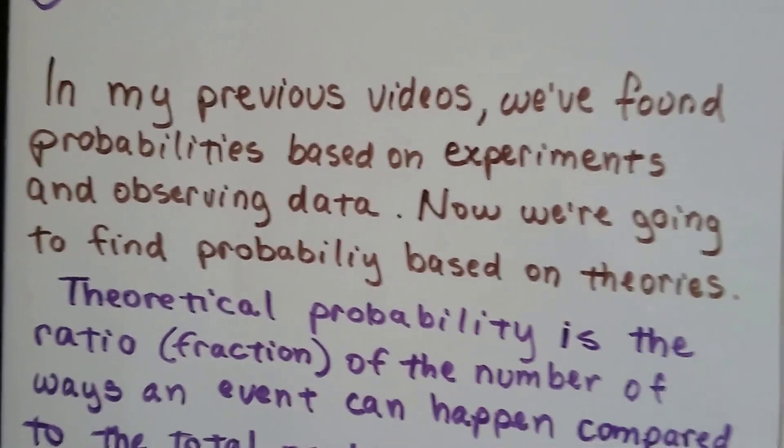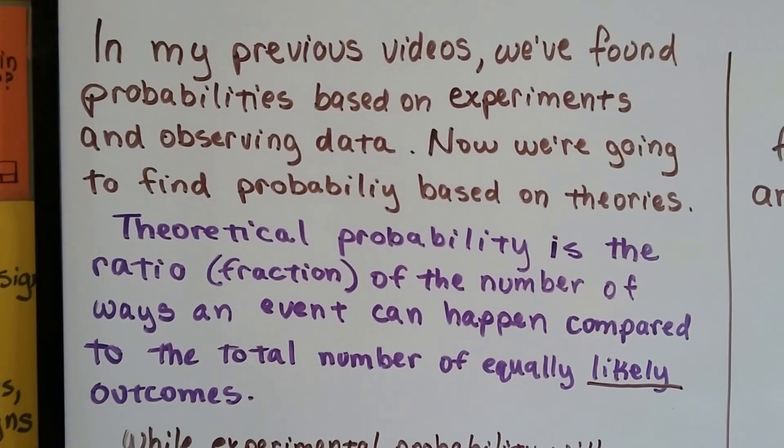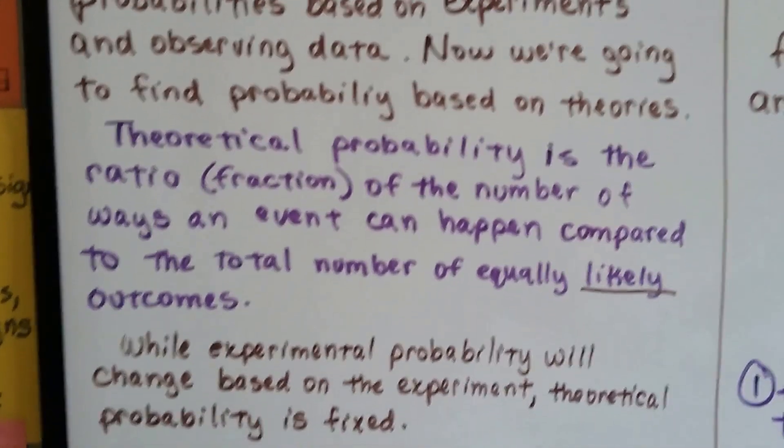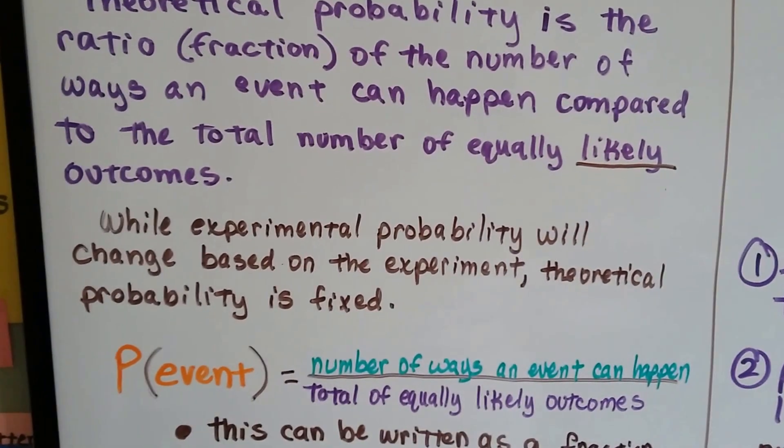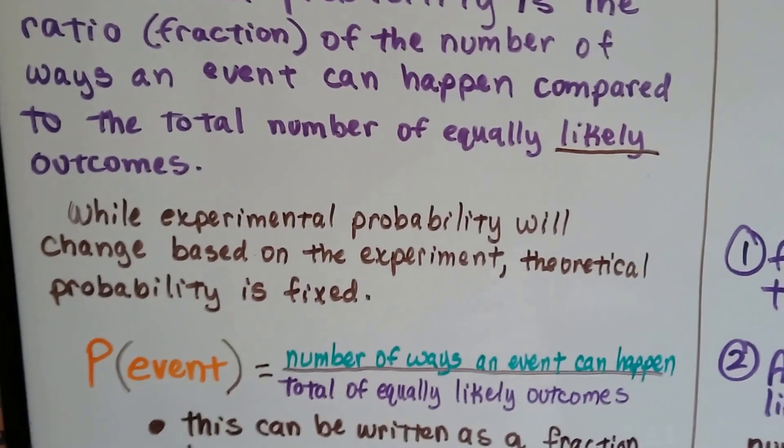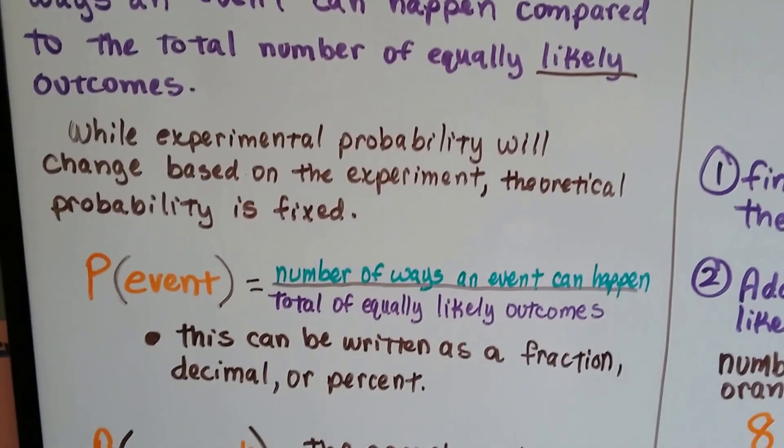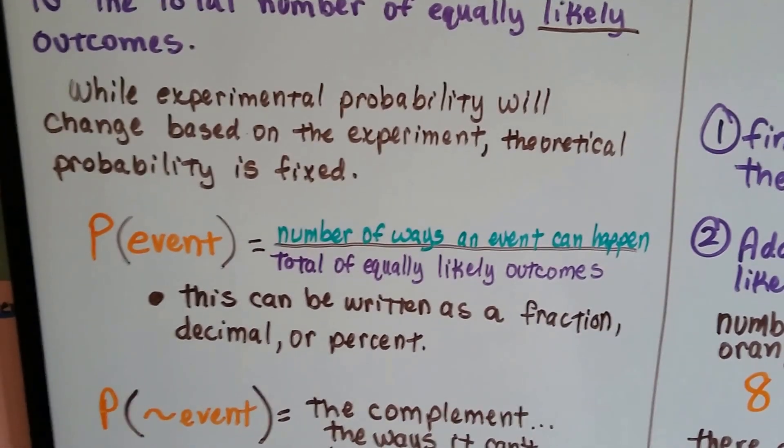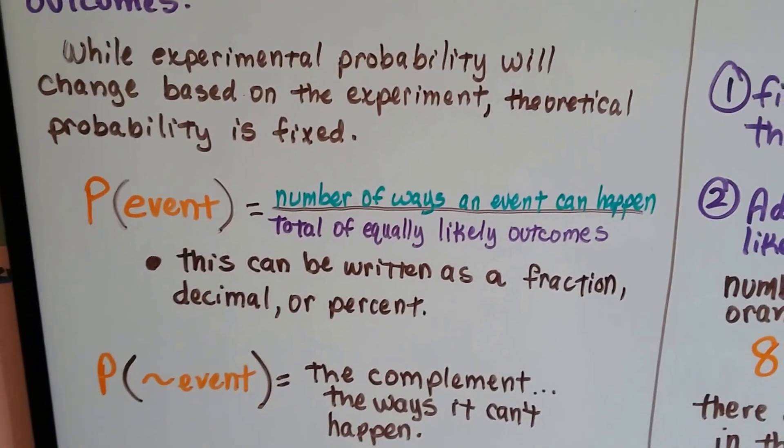In my previous videos, we found probabilities based on experiments and observing data. Now we're going to find probability based on theories. Theoretical probability is the ratio, fraction, of the number of ways an event can happen compared to the total number of equally likely outcomes. While experimental probability will change based on the experiment, theoretical probability is fixed.